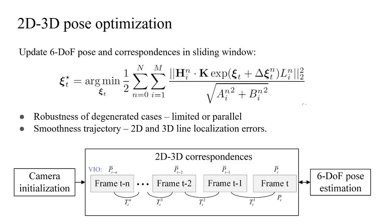After getting all the 2D-3D correspondences, we optimize the camera pose in a sliding window, because the correspondences for a single frame may be limited and there are some degenerate cases. We transfer the former n-frame correspondences to the current frame using the current motion. The camera motion delta-ksi is assumed constant, and ksi is the camera pose of the current frame. We minimize the projection distance of 3D line endpoints to the corresponding 2D lines. Using the sliding window makes the system robust to degenerate cases like limited correspondences or all 3D lines being parallel, and it also creates a smooth trajectory.